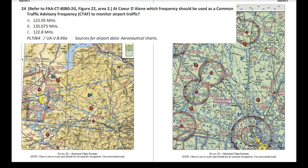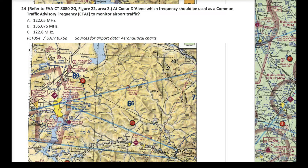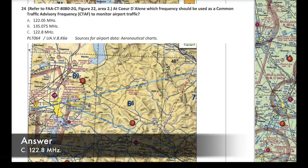Question 24 has us refer to Figure 22, area two. The question asks: at Coeur d'Alene Airport, which frequency should be used as the common traffic advisory frequency, or CTAF, to monitor airport traffic? Right here is Coeur d'Alene Airport, and off to the right you have the description with a three-letter designator. They try to throw you off with the AWOS frequency — Airport Weather Observation System — at 135.075, which is one of the answers. But the correct answer is 122.8, designated by the circled C, which stands for CTAF. So the answer is C, 122.8.